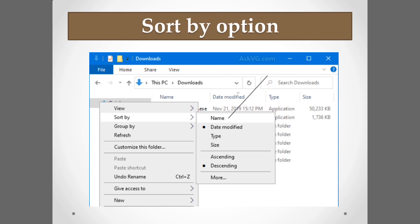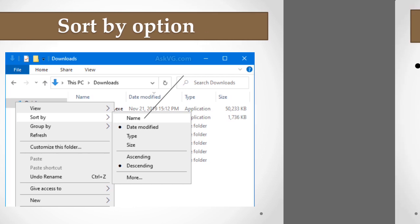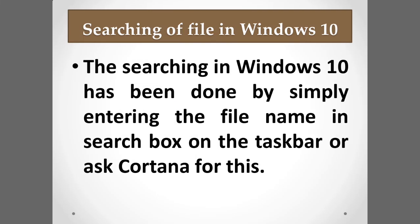See the Sort By option in the image. When you click on Sort By, a drop-down menu appears on your screen showing options: name, date modified, type, size, ascending, and descending order. You can select whichever option you want. These are all the sorting items.